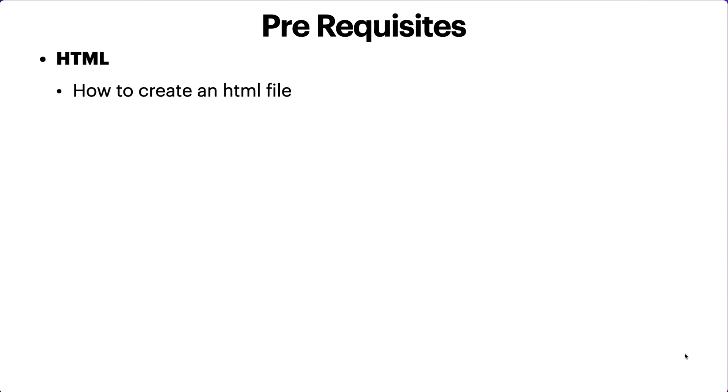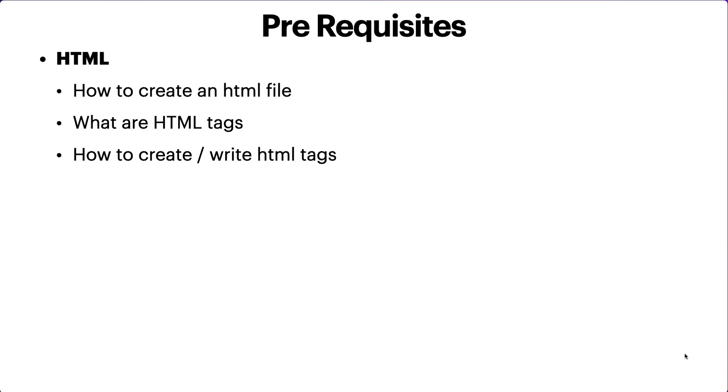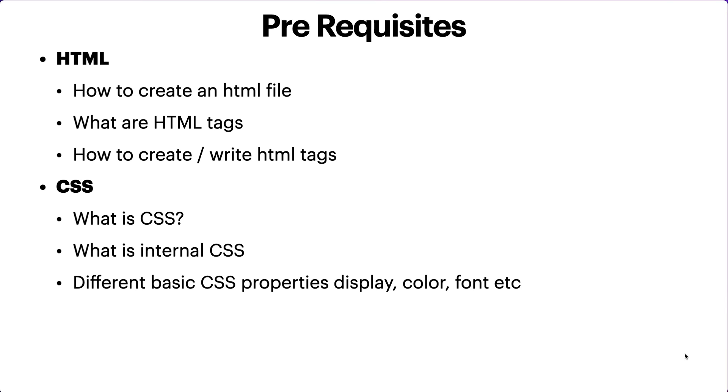First of all, prerequisites. There are a few things before starting this course. I'm assuming you would know HTML — very basic stuff like how to create an HTML file, what HTML tags are, and how to write them. On the CSS side, you should know what CSS is, what internal CSS is, and basic CSS properties like display, color, and fonts.